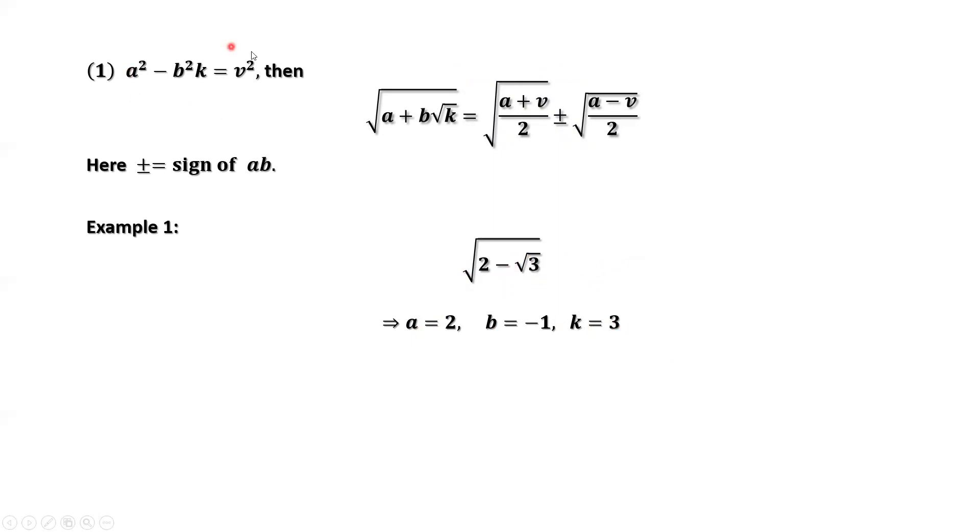We check this condition. If we can find v: a squared minus b squared times k equals 2 squared minus negative 1 squared times 3 equals 1. 1 equals 1 squared. Here we can easily find v equals 1.